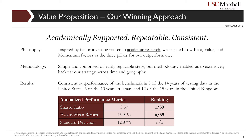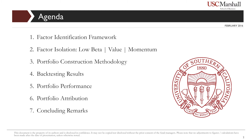Below is a brief overview of our performance metrics and CQA challenge rankings. We generated a Sharpe ratio, or risk-adjusted return, of 3.57 which was first in the challenge. We generated an excess mean return of 45.91% which was sixth in the challenge. Our standard deviation was 12.87%. Today we will cover our approach and results in the following chronology: first, how we utilized an academically supported framework for identifying investment factors; then a deep dive into low beta, value and momentum; third, portfolio construction through a screening methodology; fourth, backtesting; and finally, portfolio performance and attribution, followed by closing remarks.